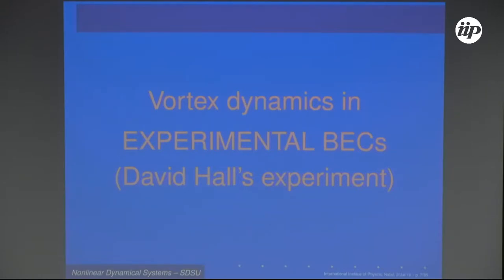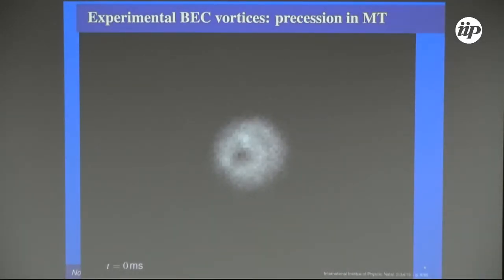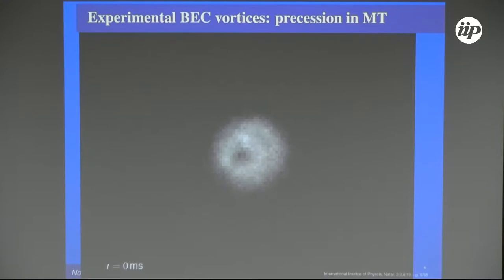Let me show you the experiments. This is not particularly new — it dates back to about 10 years ago — but I thought this would be a nice audience to show this journey from experiments to theory to numerics and back. What happens if you put just a single vortex in a trap? The vortex precesses, as you'll see here. This is a rubidium condensate with around 10^6 atoms. The vortex core here seems pretty large, but keep in mind these are images after expansion; before expansion the vortex core is really thin, maybe a hundredth of the Thomas-Fermi radius.